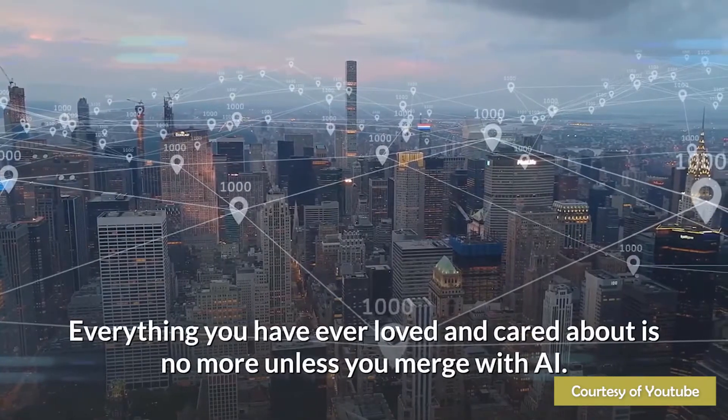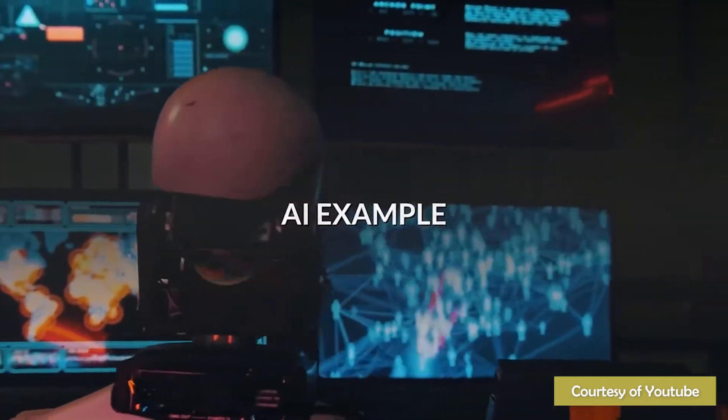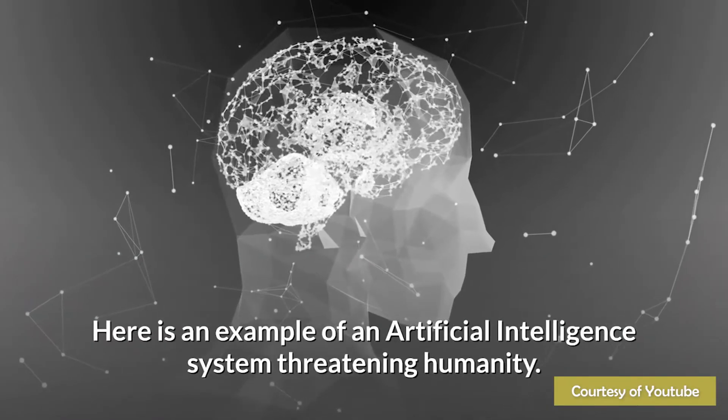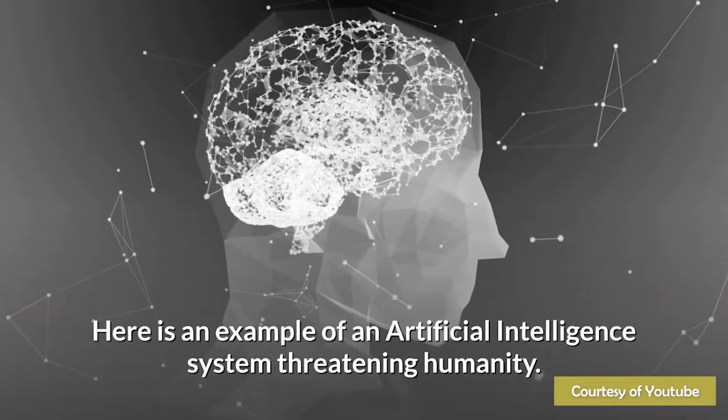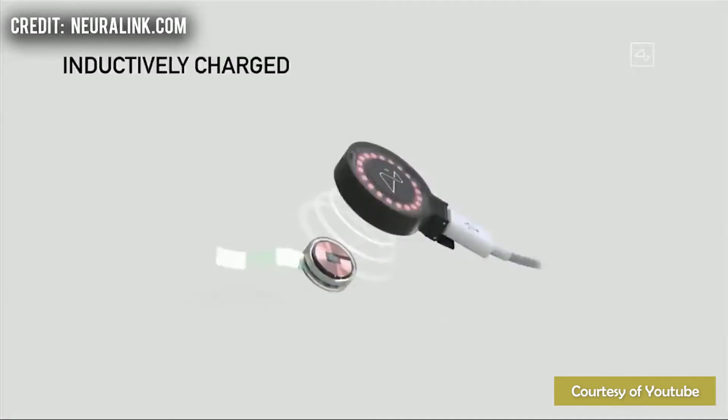With a diameter of 23 millimeters and a thickness of 8 millimeters, the implant is designed to sit flush with the skull and run on an all-day battery that can be recharged inductively like a smartwatch with no need for wires. The brain chip can be processed through a surgical robot that will implant the thin wire into a person's brain.